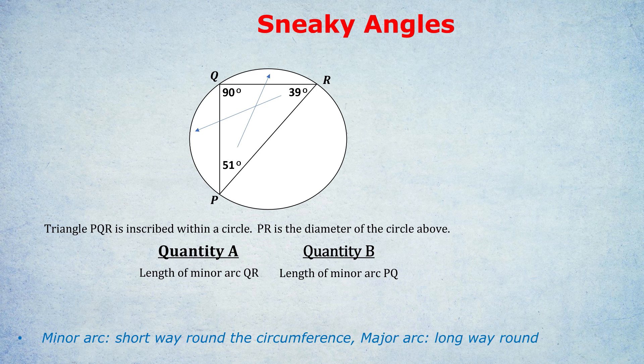And here's the answer to the question. Because quantity A, the arc QR, was opposite to the 51 degrees, it must be a bigger arc than the arc PQ, because the arc PQ is opposite to 39 degrees. 51 degrees is bigger than 39 degrees. So the arc opposite the 51 degrees, QR, must be bigger than the arc opposite the 39 degrees, PQ.